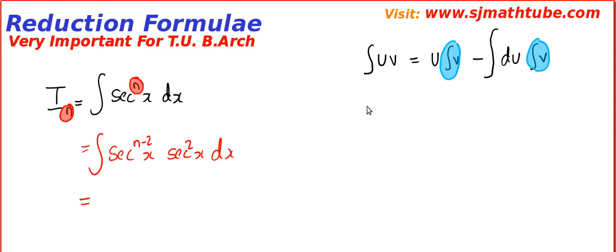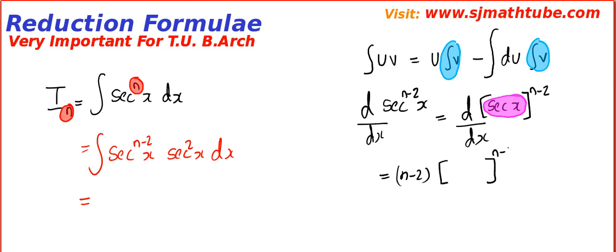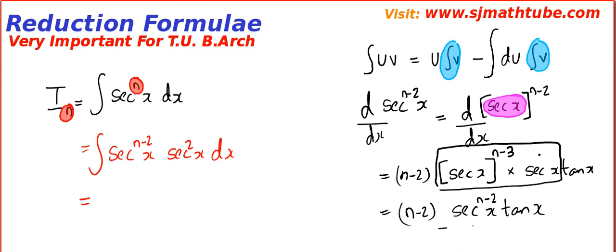Second thing I am going to do is, I am going to ask you a question. How do you differentiate sec to the power n minus 2x? We have to imagine this is actually sec x to the whole power n minus 2. So basically it looks like something to the power n minus 2. So the derivative will be n minus 2, the same quantity to the power n minus 2 minus 1, that is n minus 3, multiplied by the derivative of sec x which is sec x into tan x. Now let's combine this much. What will you get if you combine these two? n minus 2, sec to the power n minus 3 plus 1, that is 2 into tan x. So we have settled the derivative.